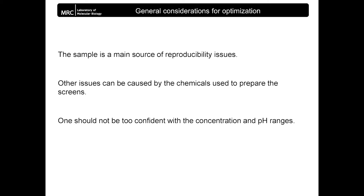A main source of reproducibility issues is the sample itself. Typically, optimization happens several days after initial screening. This requires a different sample preparation, or a sample that was stored in the fridge or frozen. In any case, the sample is not strictly the same as the one used during initial screening.